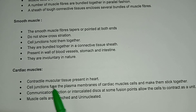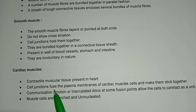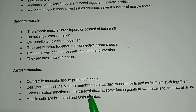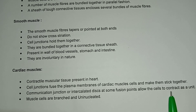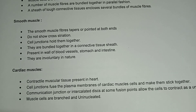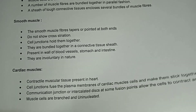Cardiac muscle is the contractile muscular tissue present in the heart. Cell junctions fuse the plasma membranes of cardiac muscle cells and make them stick together. Communication junctions, or intercalated discs, at some fusion points allow the cells to contract as a unit. Muscle cells are branched and uninucleated.